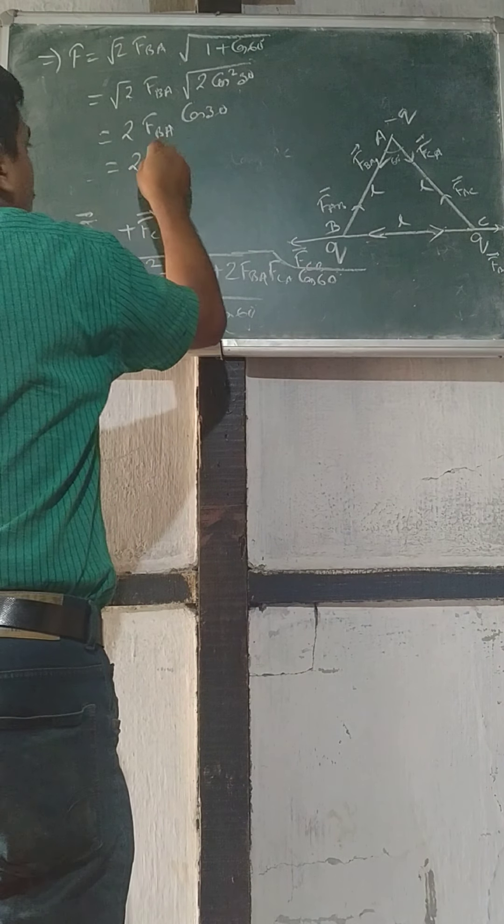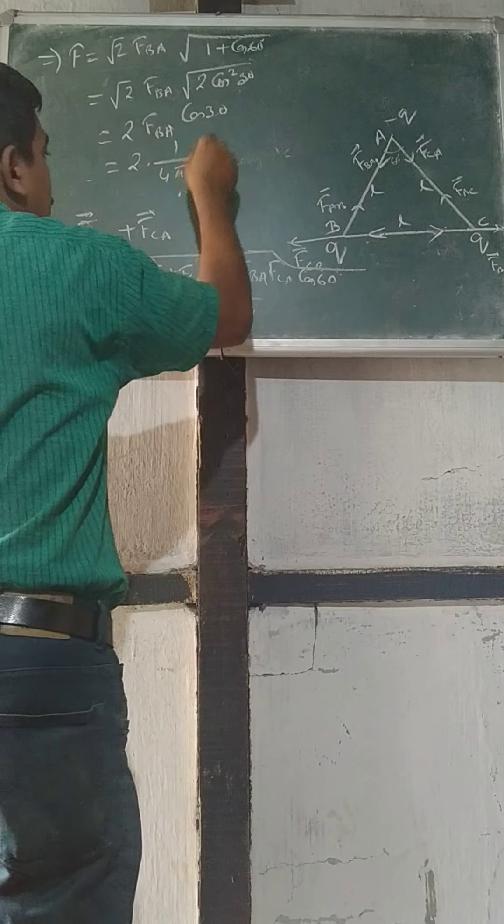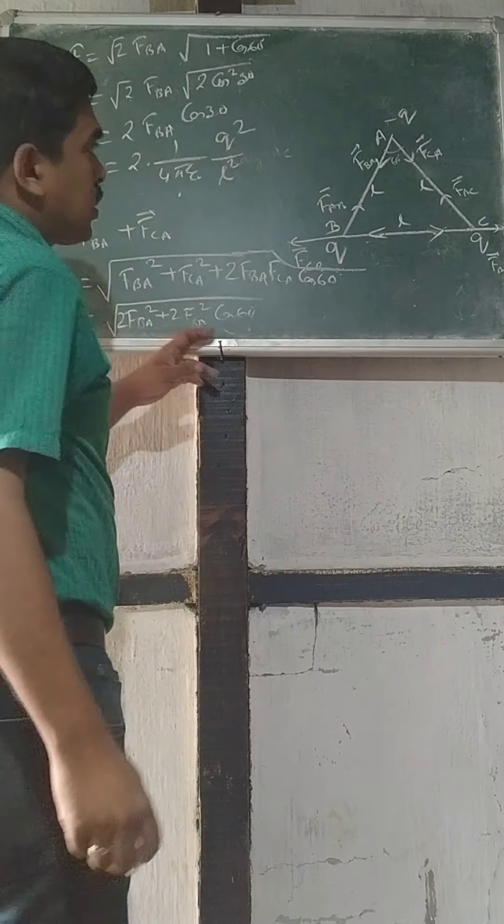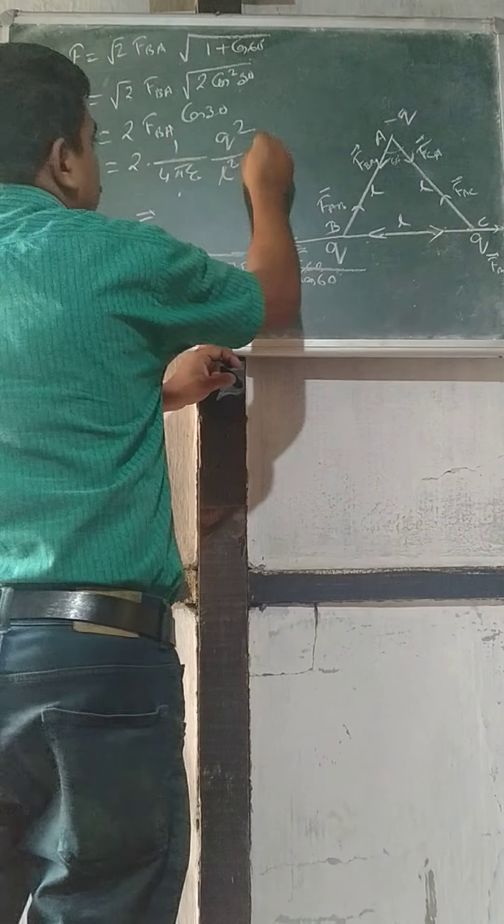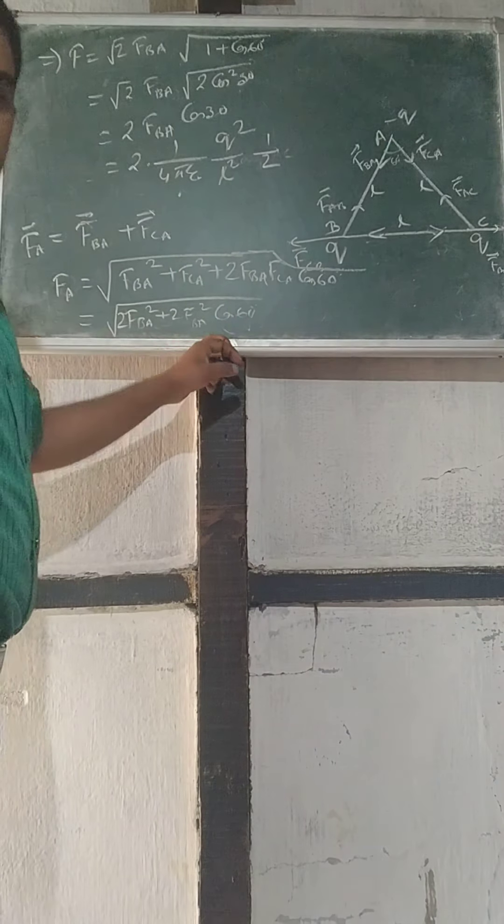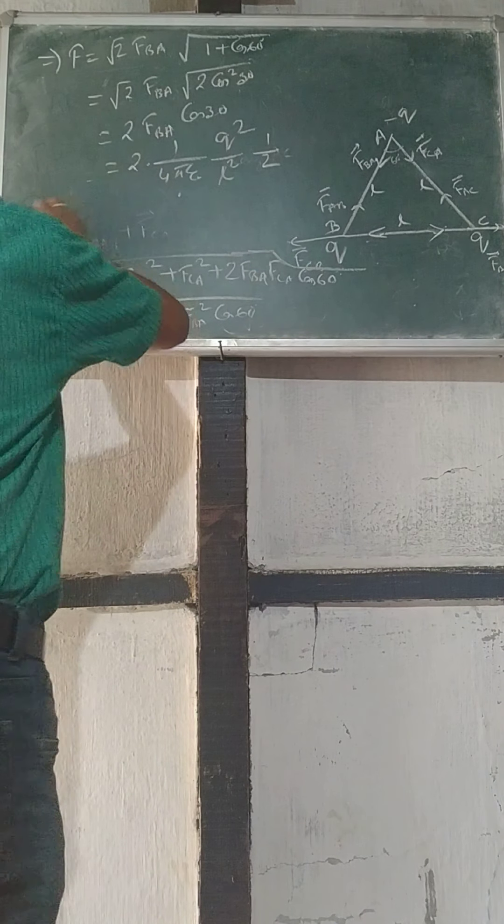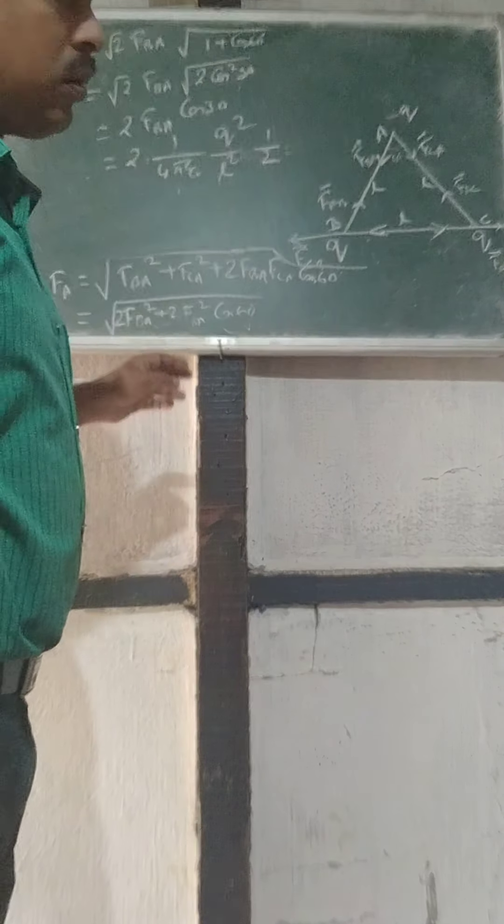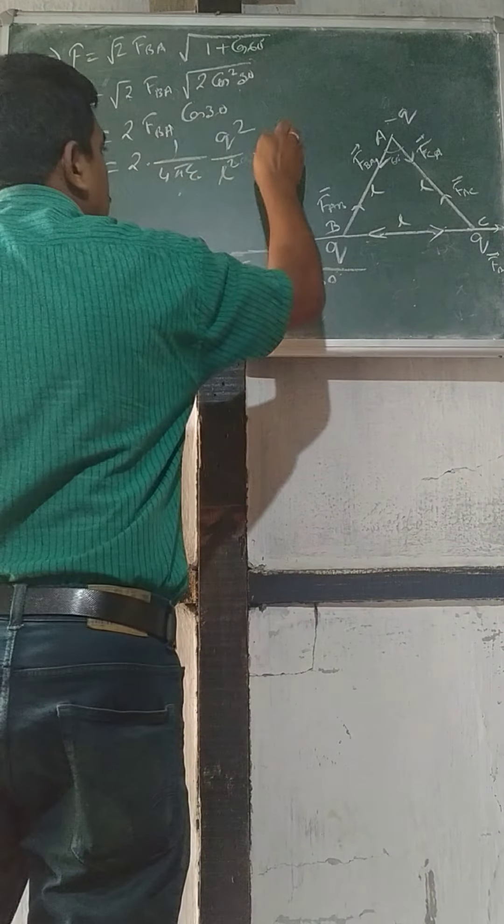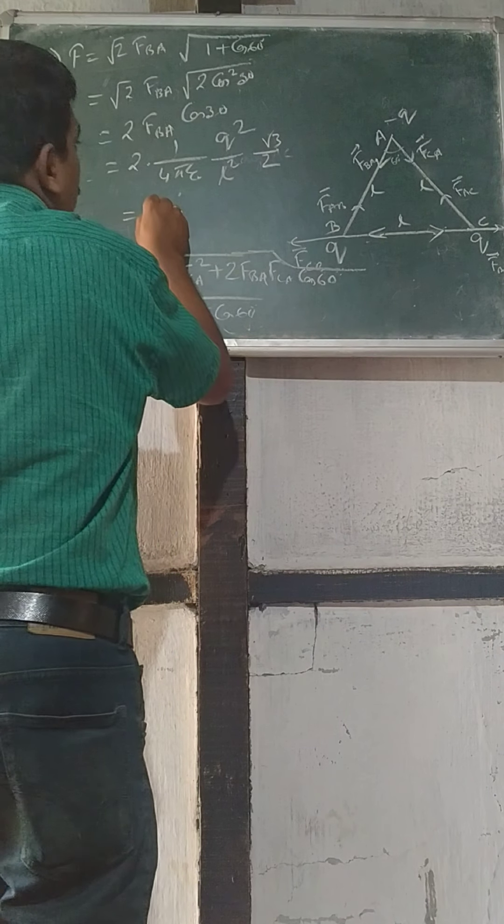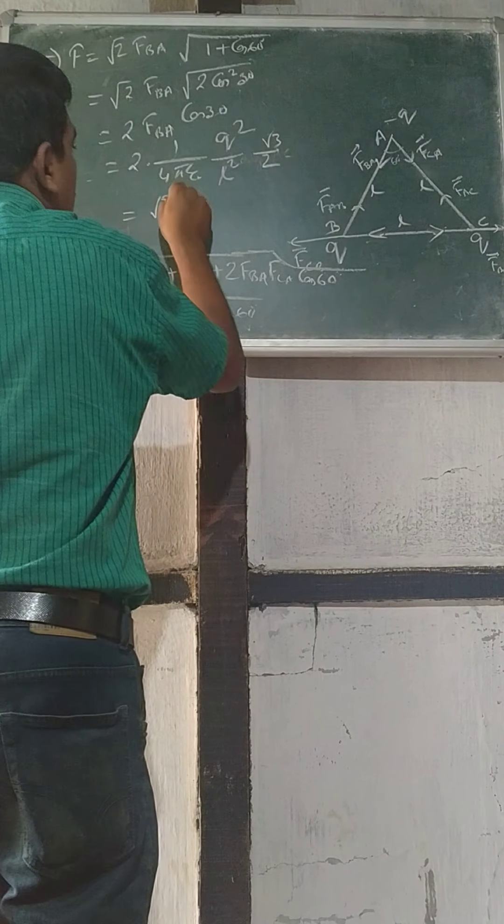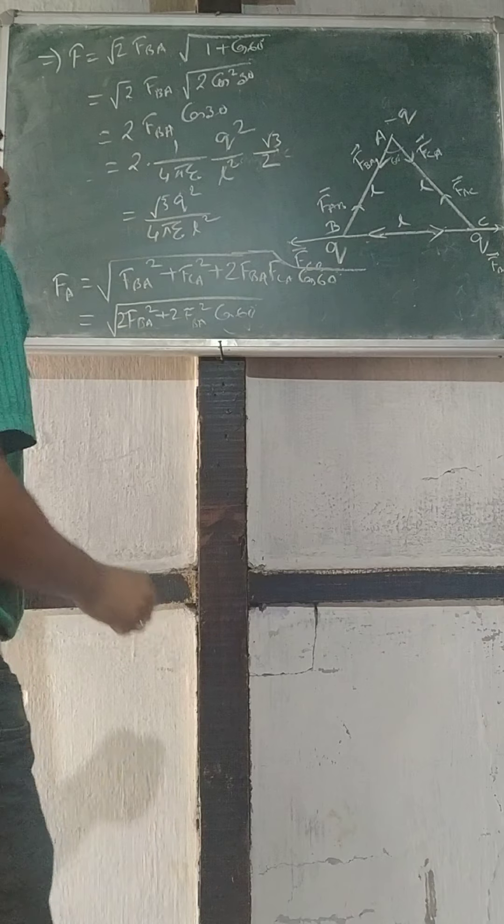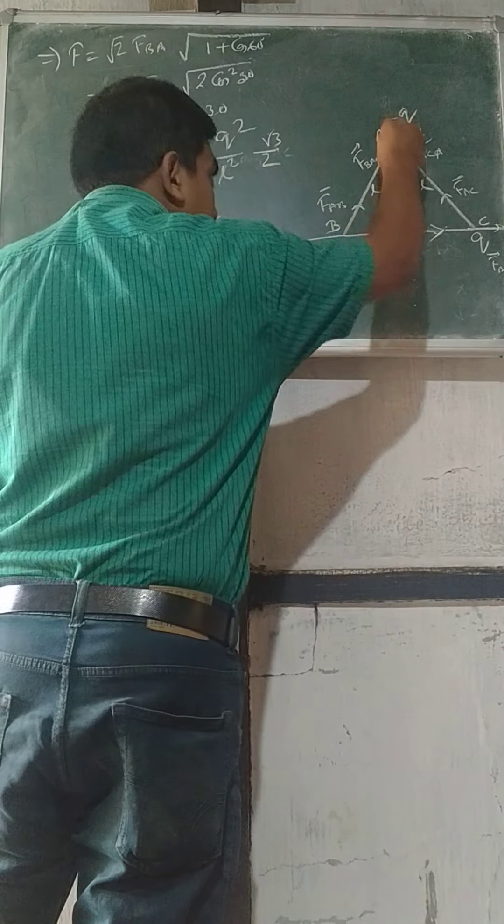So FBA is 1 by 4 pi epsilon 0, Q square by L square cos 30. Sorry, cos 30 is root 3 by 2. Cos 30 is root 3 by 2. So it will be root 3, root 2 Q square by 4 pi epsilon 0 L square along this middle direction.